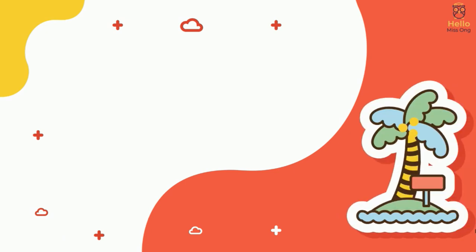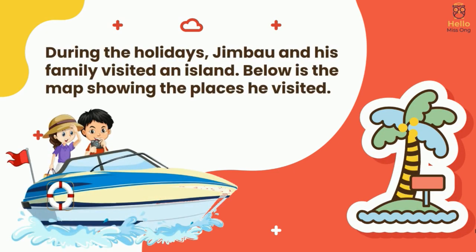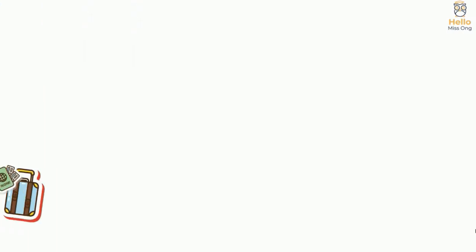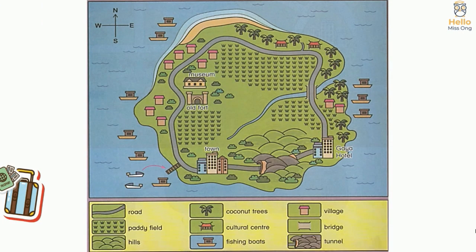Next, Exercise One. During the holidays, Jimbao and his family visited an island. Below is the map showing the places he visited. Let's look at the map — what information can we find on it?